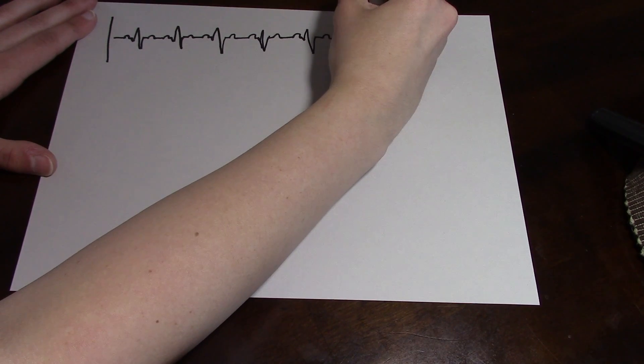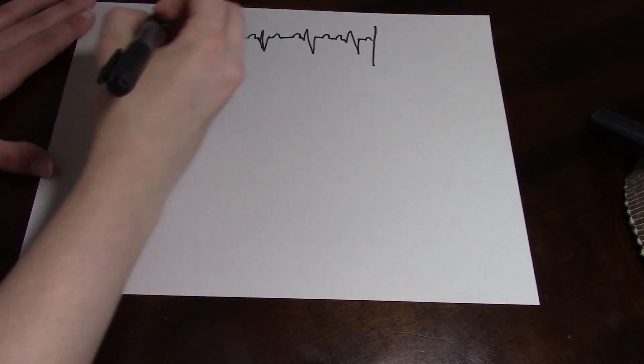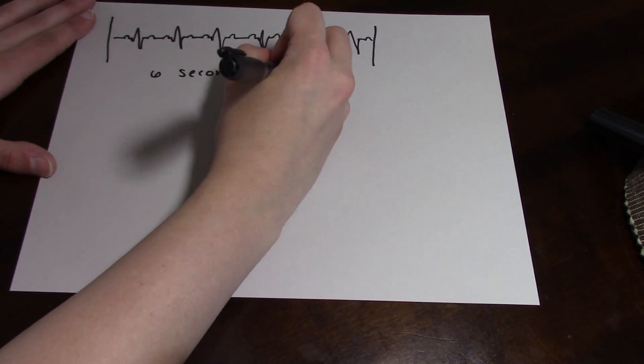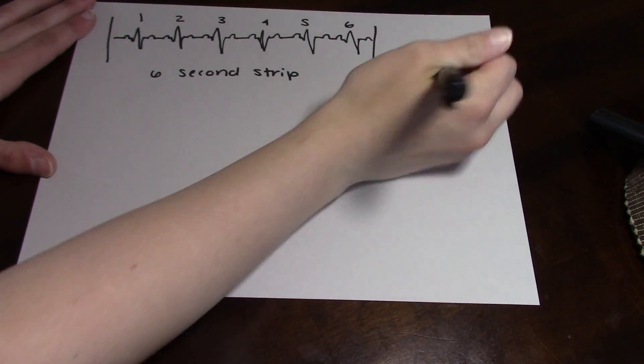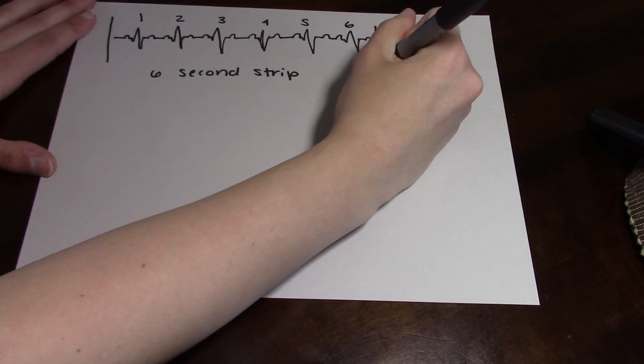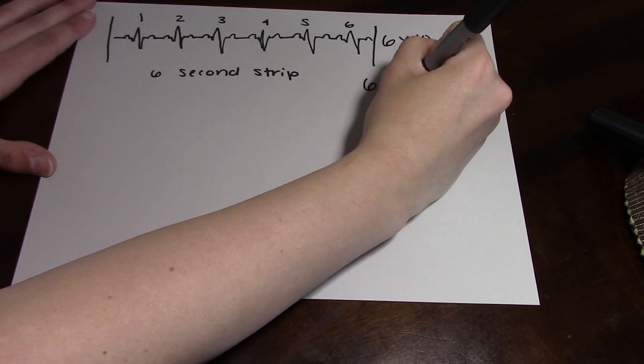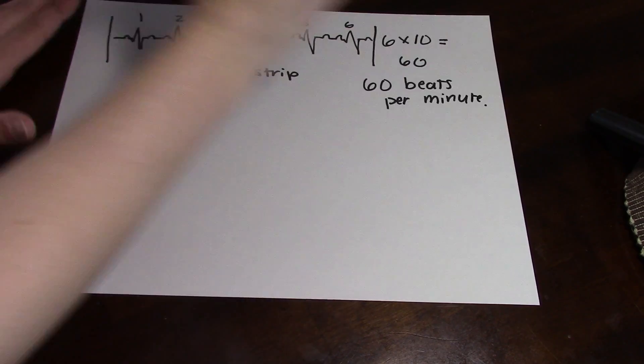The first way is just by counting the number of R's there are, or the QRS segments, and then multiplying that by 10. Because it's a six second strip times 10, it gives you 60 seconds. So if you have six QRS's, then this rhythm is going to be 60 beats per minute.